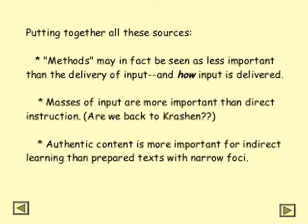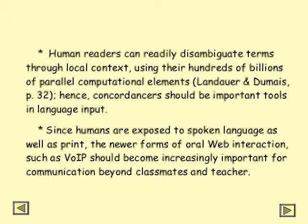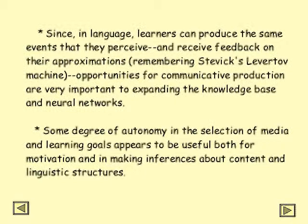Authentic content is more important for indirect learning than prepared text with narrow foci — and again, this is based on what Landauer and Dumais' latent semantic analysis can tell us. Human readers can readily disambiguate terms through local context, using their hundreds of billions of parallel computational elements. Hence, concordancers should be important tools in language input, because you are getting a certain degree of context when you look up something through a concordancer. Since humans are exposed to spoken language as well as print, newer forms of oral-web interaction — such as voice-over Internet protocols — should become increasingly important for communication beyond classmates and teachers. Opportunities for communicative production are very important to expanding the knowledge base and neural networks.